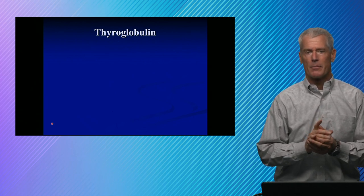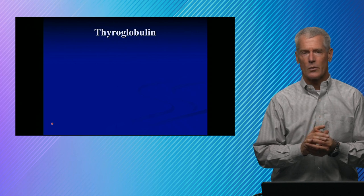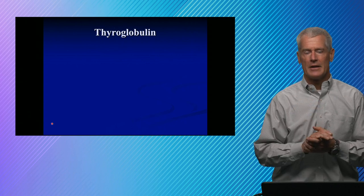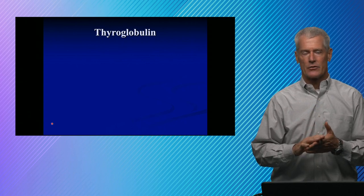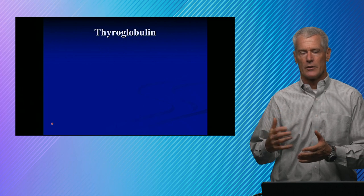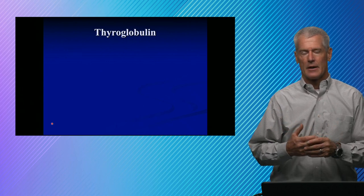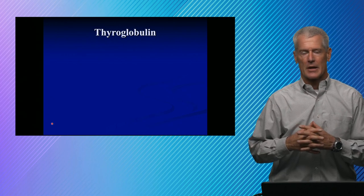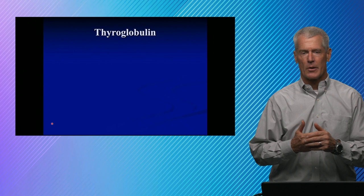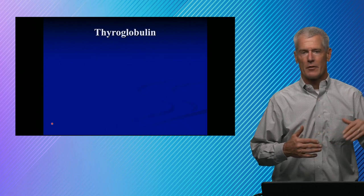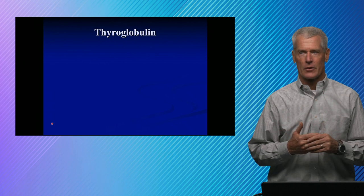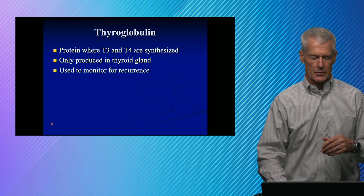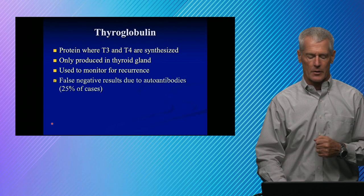Thyroglobulin is the protein where T4 and T3 are synthesized — it's a protein really only found in the thyroid gland. So if you have thyroid cancer and you surgically remove the thyroid gland, your thyroglobulin should go down to undetectable. We use thyroglobulin as a tumor marker to look for recurrence: do you have a measurable amount of thyroglobulin after doing surgery on the patient? We're primarily using it for recurrence detection.